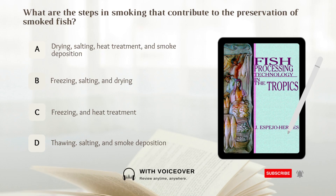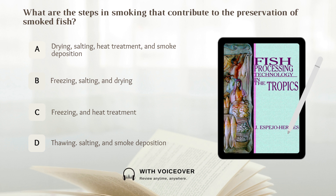What are the steps in smoking that contribute to the preservation of smoked fish? A. Drying, salting, heat treatment, and smoke deposition. B. Freezing, salting, and drying. C. Freezing and heat treatment. D. Thawing, salting, and smoke deposition.